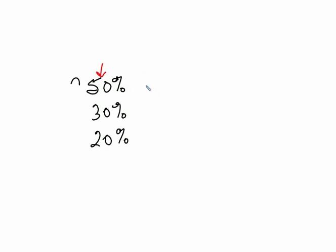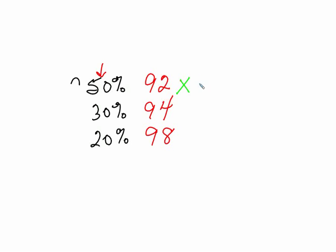Let's say on your tests you have a 92, because you're really good about doing your test corrections. Labs can get tricky, but you've worked hard on that evidence section and you have a 94. And you've done a great job with your web assign, so that's a 98. To calculate your grade, we would multiply that by 0.50, this by 0.30, and this by 0.20.